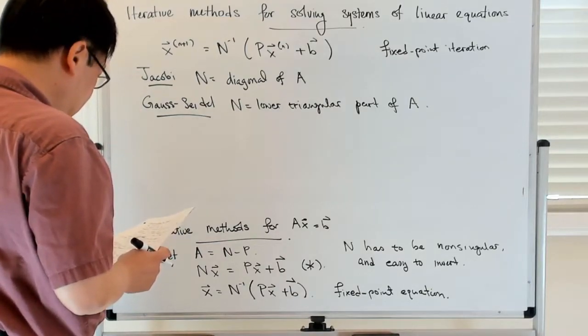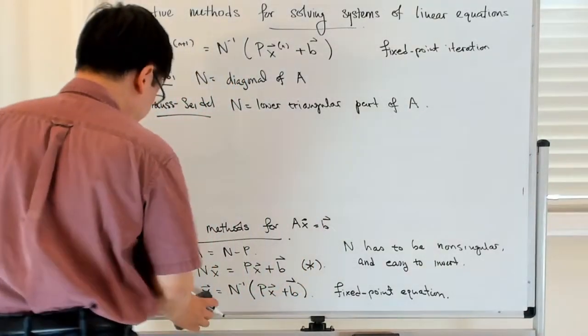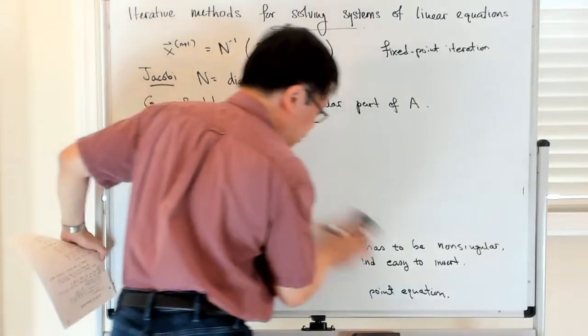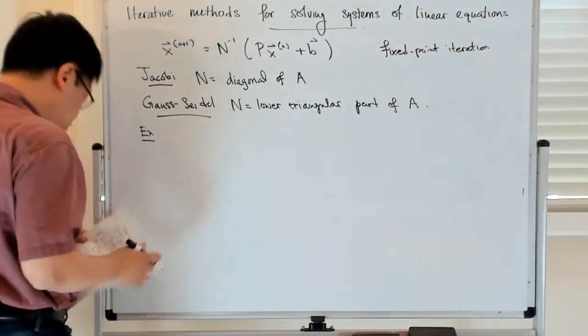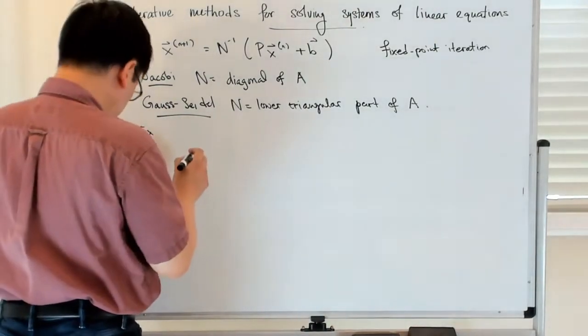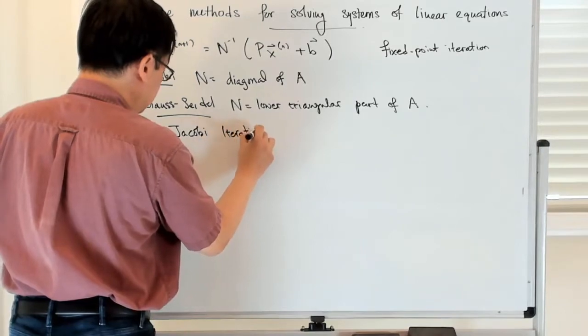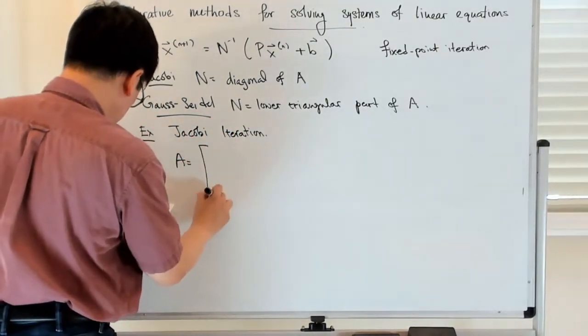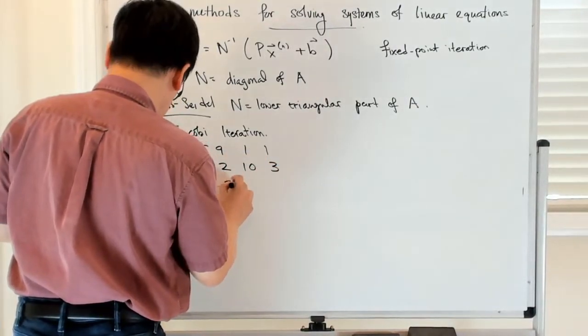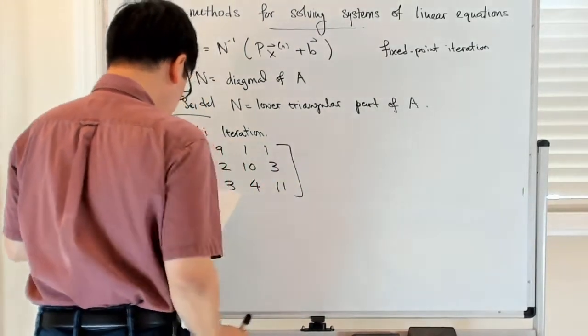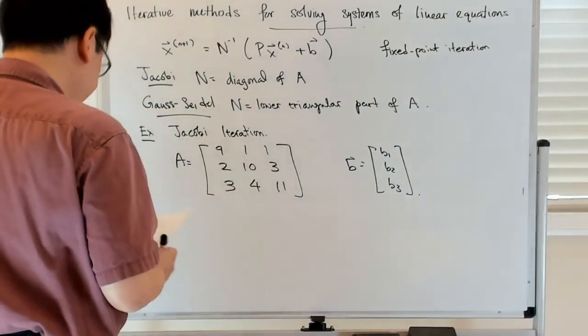Let's look at the example of Jacobi. So I have an A matrix. Let's call that [[9, 1, 1], [2, 10, 3], [3, 4, 11]]. Then the B, I'm just going to call it [B1, B2, B3].